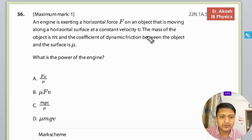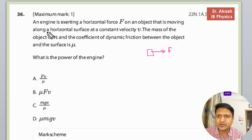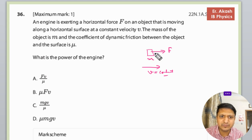So champions, there is another question. An engine is exerting a horizontal force F on an object that is moving along a horizontal surface with a constant velocity v. The mass of the object is m and the coefficient of dynamic friction between the object and surface is μ. What is the power of the engine?